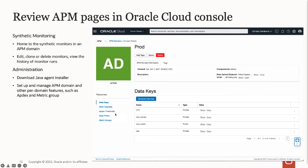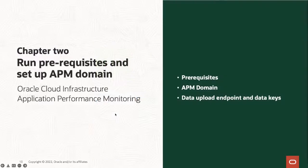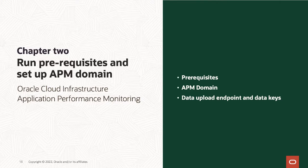Now we'll move to chapter two. In this chapter, I will go over the policies and permissions required to start using APM, then talk about the APM domain and how to collect data, upload endpoints, and data keys — the parameters you need when deploying data collectors.